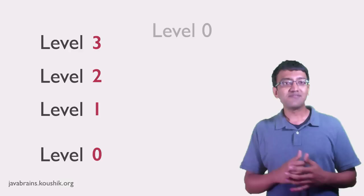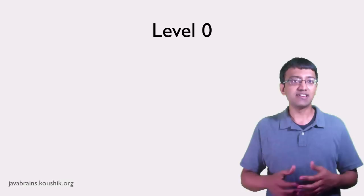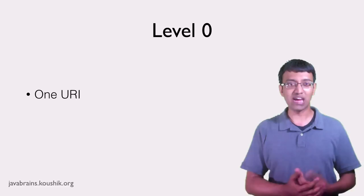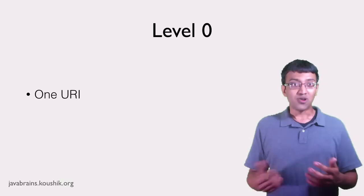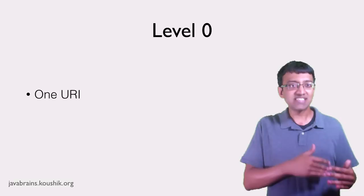Let's start with level zero. I hope you're familiar with some of the basics of a SOAP web service. The way a SOAP web service generally works is that there is a URL called the endpoint where the service is exposed — one URL that receives all requests from the client. If you were to write a messenger API as a SOAP web service, you'd probably have one URI, say server-name slash messenger, and this URL would receive all the requests. How does it know what operation to perform?